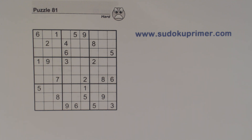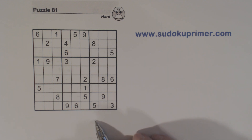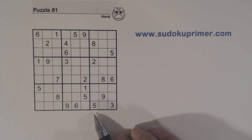This is puzzle number 81 from volume 132 of Sudoku to Go by Soap Opera Digest. I'm going to start filling in numbers here. If you have any questions about any numbers that I fill in or anything about the puzzle, please leave a comment and I'll answer your questions.